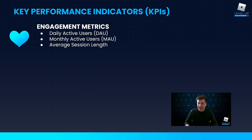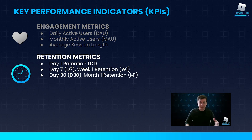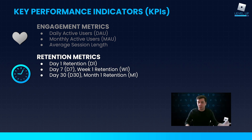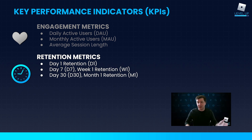Those are our engagement metrics. Up next, and arguably the most important set of metrics in my opinion as a designer, we have retention. Retention metrics determine whether or not players are returning to the game, and they're measured over different periods of time. Day one retention is from the first time they play the game — day zero to day one — are they returning? Day seven or week one retention asks whether a new player who joined last week returned the following week. And day 30 or month one retention asks whether a player who started last month is returning this month.